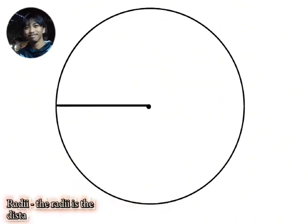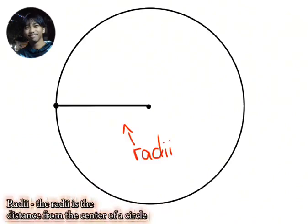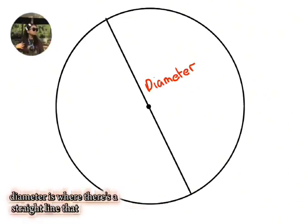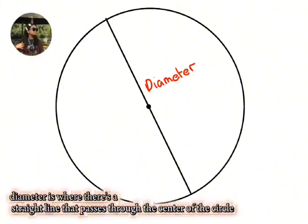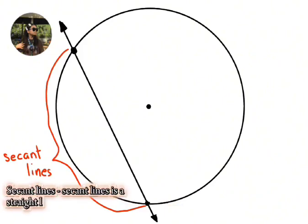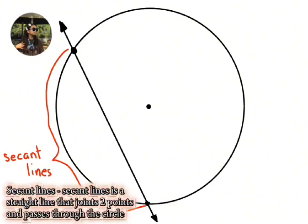Radii. The radii is the distance from the center of a circle. Diameter is where there's a straight line that passes through the center of the circle. Secant lines is a straight line that joins two points and passes through the circle.